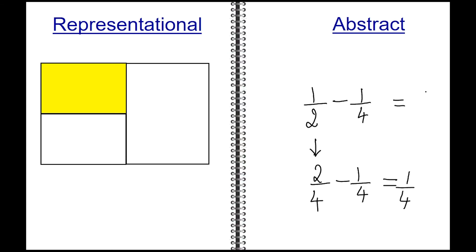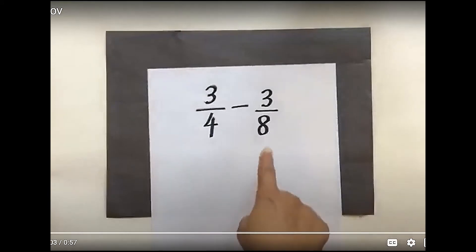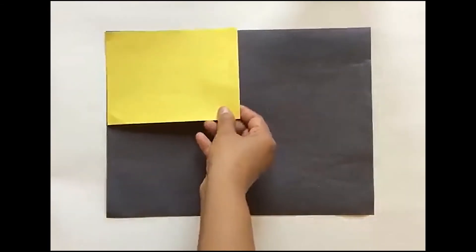1 half minus 1 fourth is 1 fourth. Let's focus on subtracting 3 eighths from 3 fourths. To begin with, let's use the yellow construction paper to represent our 3 fourths.